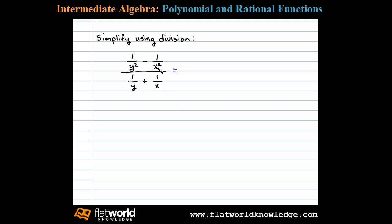To do that, we look for the LCD of the numerator. In this case we have an x squared and a y squared, so the LCD will be x squared times y squared. We'll multiply numerator and denominator by x squared, and numerator and denominator by y squared, giving us equivalent fractions with common denominator x squared times y squared. That leaves us with x squared minus y squared in the numerator as a single algebraic fraction.